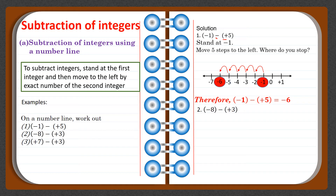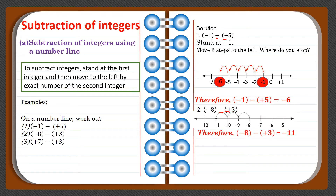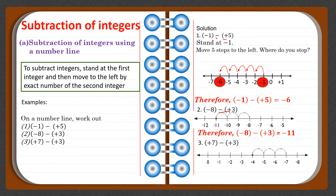You can do it the same way for the next examples. Minus eight minus positive three: minus followed by plus becomes minus, so we have minus eight minus three. We stand at minus eight and move three steps to the left, stopping at minus eleven. So minus eight minus positive three equals minus eleven. For plus seven minus positive three: minus and plus becomes minus, so we stand at seven and move three steps left, stopping at positive four. The answer is plus four.